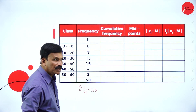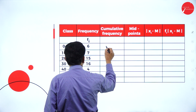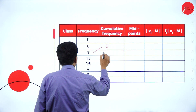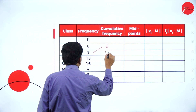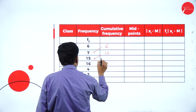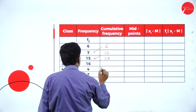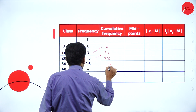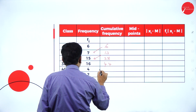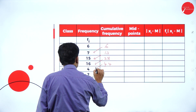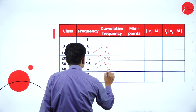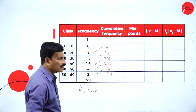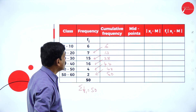Now find out the cumulative frequency (CF). The cumulative frequency starts as 6. Then 6 plus 7 equals 13. Again 13 plus 15 equals 28. Then 28 plus 16 equals 44. Again 44 plus 4 is 48. Then 48 plus 2 is equal to 50. This is the cumulative frequency.